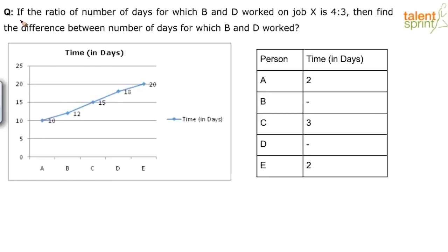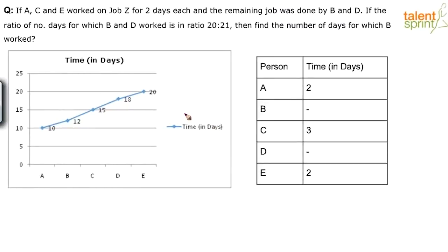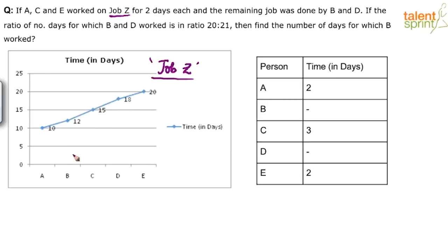Here's the next question: if A, C, and E worked on job Z for two days each, and the remaining job was done by B and D, and the ratio of the number of days for which B and D worked is 20 to 21 — find the number of days for which B worked. For job Z, the time requirements are: A = 10 days, B = 12 days, C = 15 days, D = 18 days, E = 20 days.